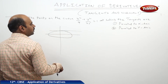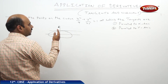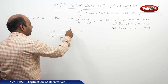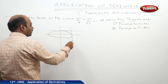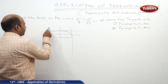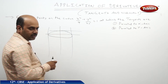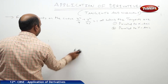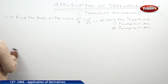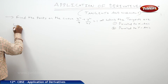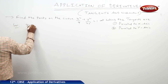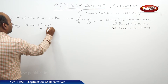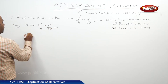If you observe carefully, the curve represents an ellipse. We need to find the tangent which is parallel to the x-axis and also the tangents which are parallel to the y-axis. Given x²/4 + y²/25 = 1, we differentiate implicitly: 2x/4 + (2y/25)(dy/dx) = 0.